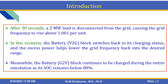After 30 seconds, a 2 MW load is disconnected from the grid, causing the grid frequency to rise above 1.001 per unit. In this scenario, the V2G battery block switches back to its charging status and the excess power helps lower the grid frequency back to the desired range. Meanwhile, the G2V block — grid to vehicle — continuously charges during the entire simulation as its state of charge remains below 80%.